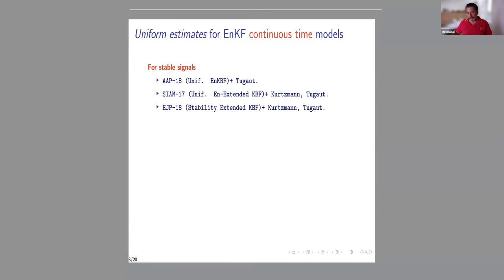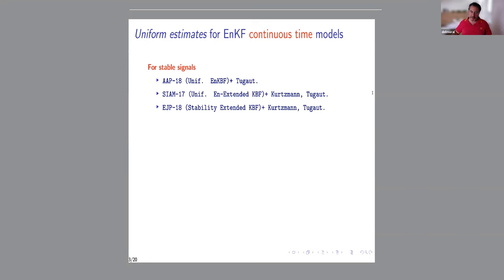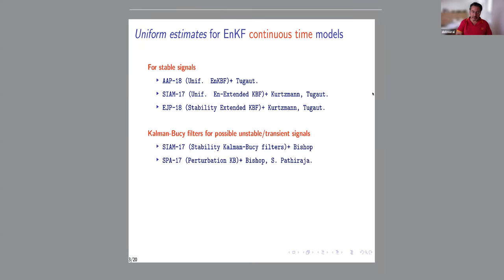I stopped working on this subject in continuous time. I did a lot of work on this with Julian, Hugo, and Aline Kurtzmann, mainly for stable signals. When I met Adrian Bishop in Sydney, we discussed it, and he told me: 'Your results are trivial — the signal is stable, so it goes to zero. If you don't have uniform estimates in time, your analysis is rubbish. You should just estimate by zero; you'll have uniform-in-time estimates.' That was not very convincing, so we started working with unstable and transient signals.